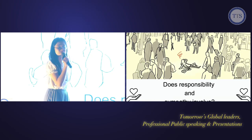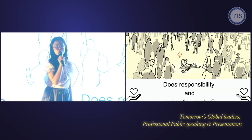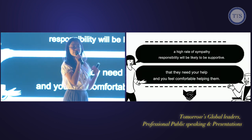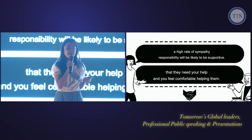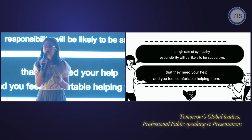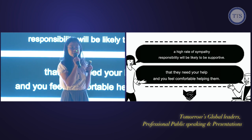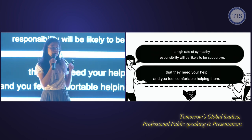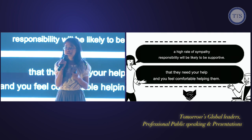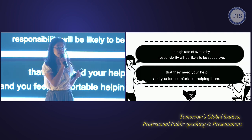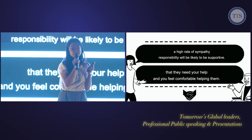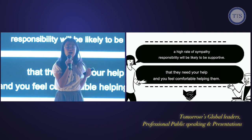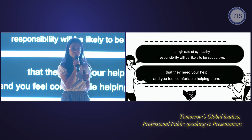So does responsibility and sympathy get involved? Choosing not to help — or choosing to help — starts from responsibility and sympathy. A person with a high sense of responsibility and sympathy will be more supportive and have a higher chance of helping the victim, even if there are many people around. This makes researchers curious about whether brain functions are involved in this process.